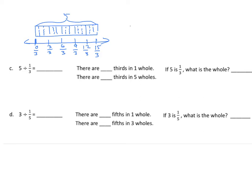We'll draw another number line. If five is one-third of the whole, what is the whole? We partition it into three equal parts since we're talking about one-third. Each part is five, so five plus five plus five is fifteen. Five divided by one-third equals fifteen. There are three-thirds in one whole, so in five wholes there are fifteen thirds. And if five is one-third, the whole is fifteen.